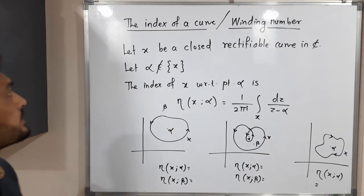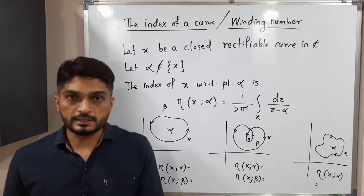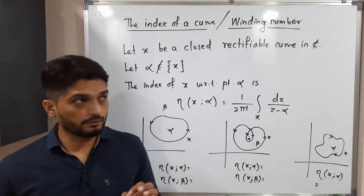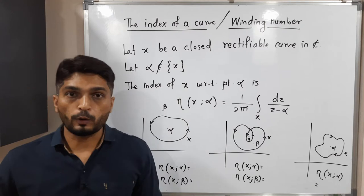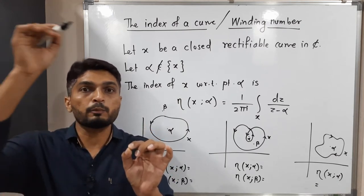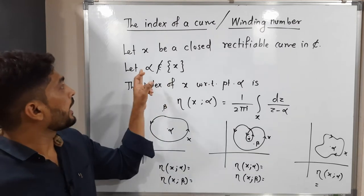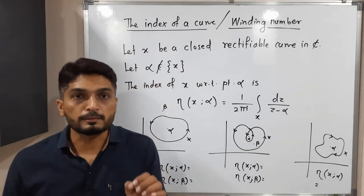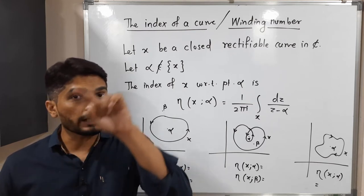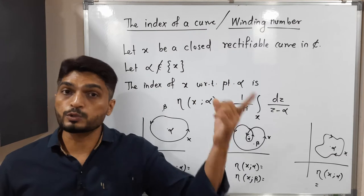Hi everyone, let us discuss the concept of index of a curve or winding number. Here we consider any closed rectifiable curve in a complex plane C. Closed curve means the starting and ending point of the curve must be the same. So we have a curve x and we take any complex number alpha. It should not be on the curve.